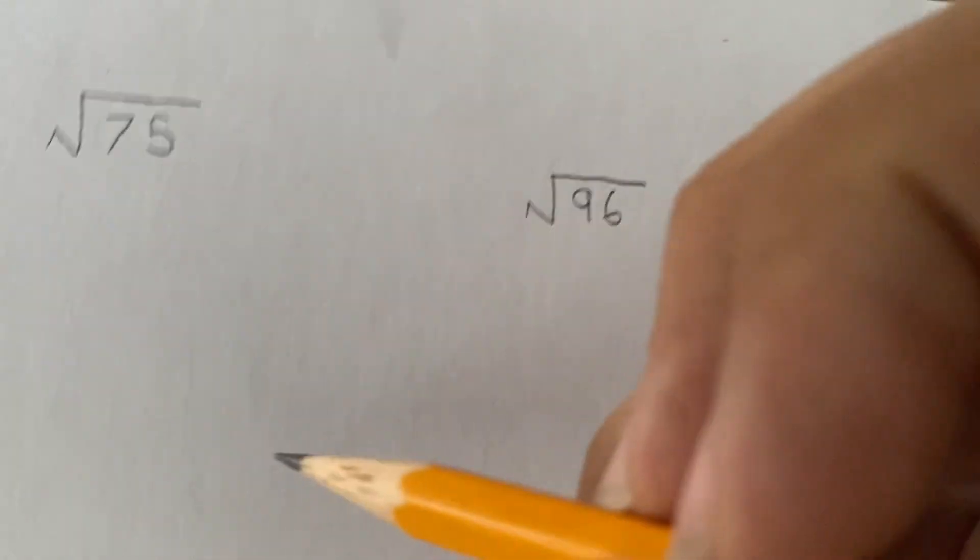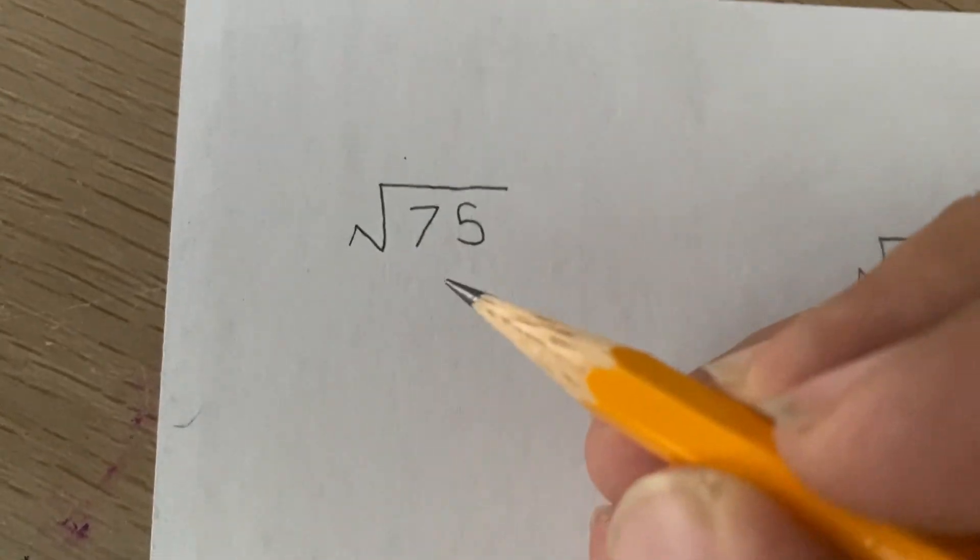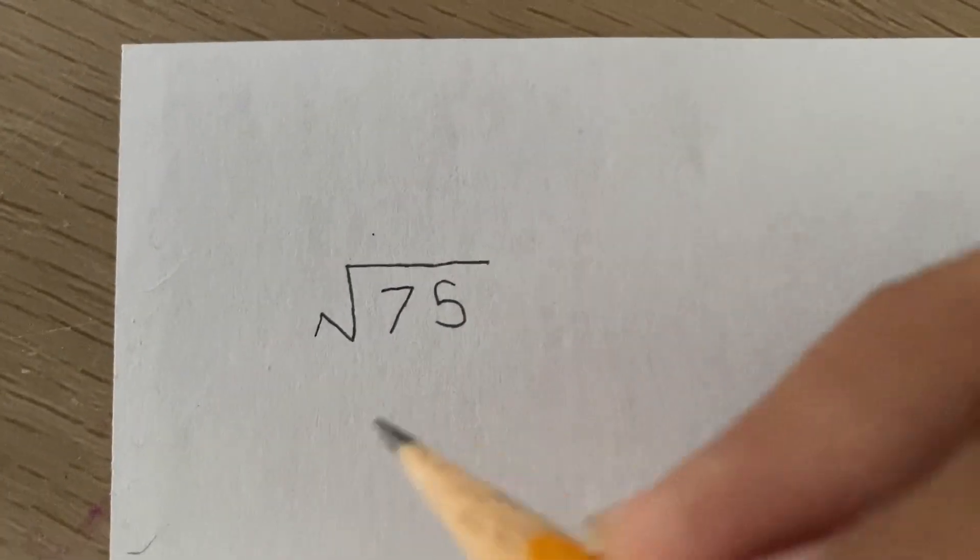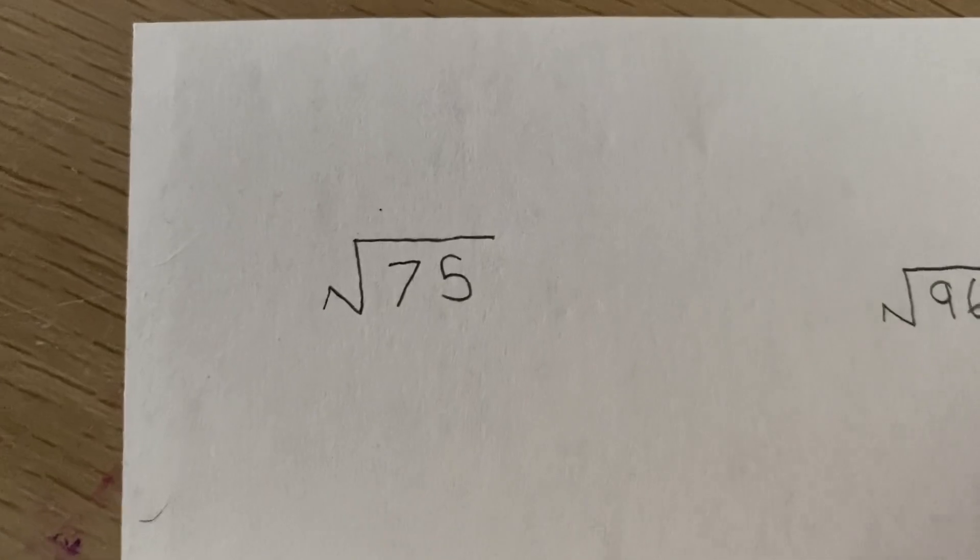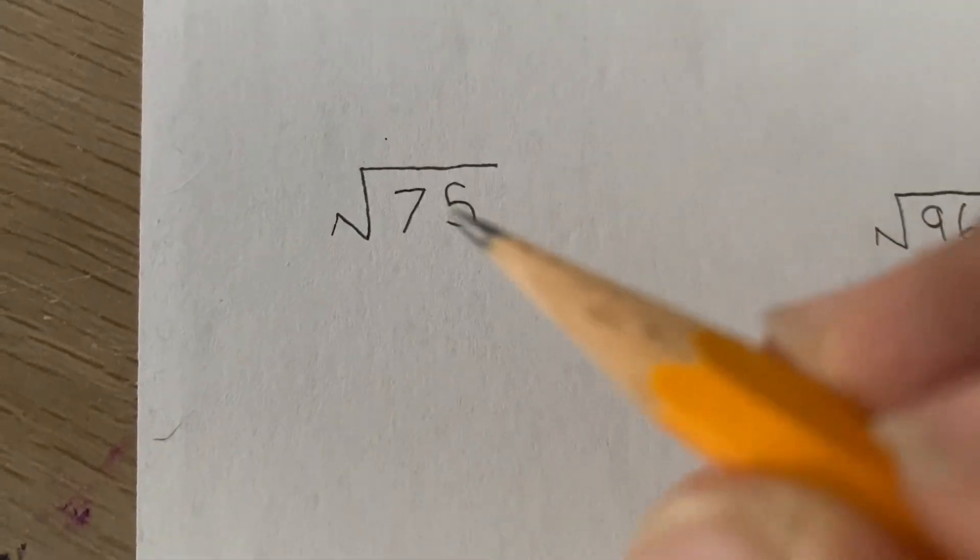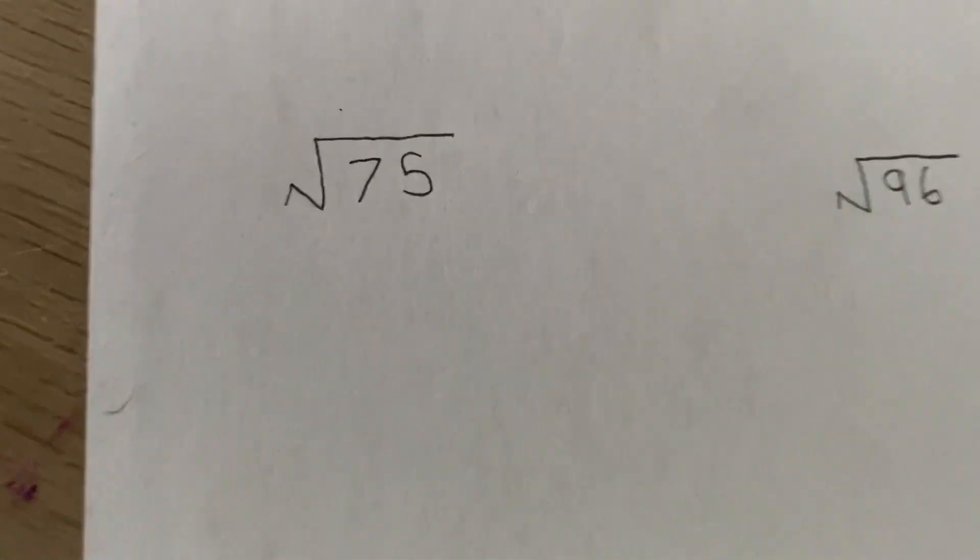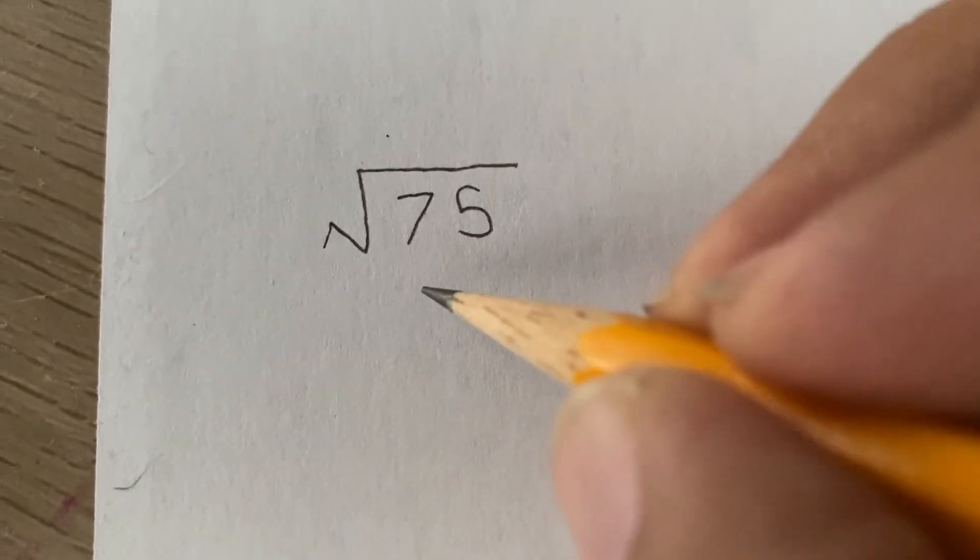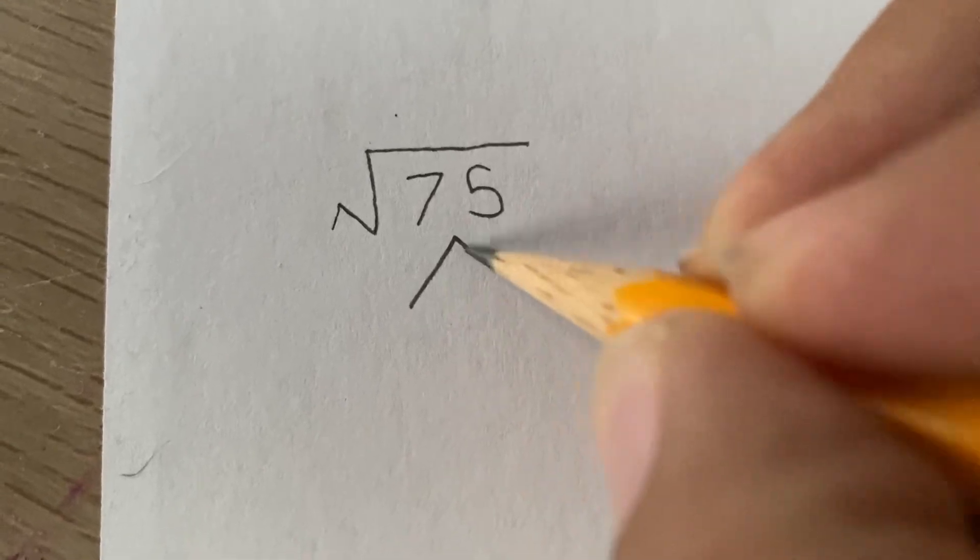Okay, first we're going to learn how to simplify this. So you think to yourself, what two numbers multiply to make 75? We're going to find out all the prime numbers that multiply together to make 75. Prime numbers are numbers that are only divisible by one and itself to produce an integer as a result.